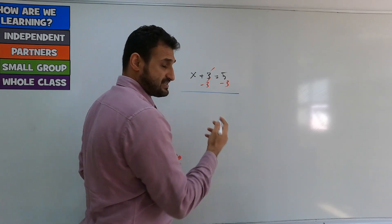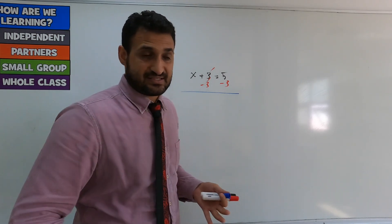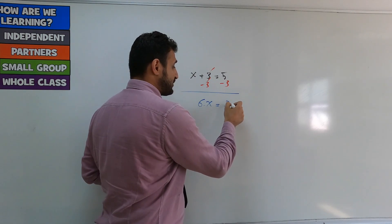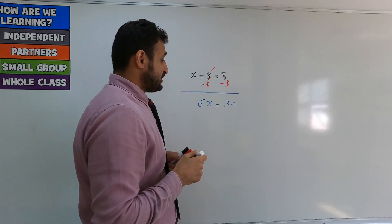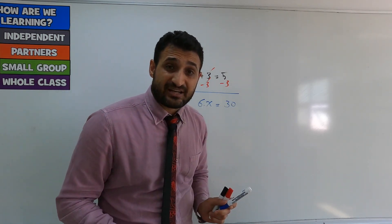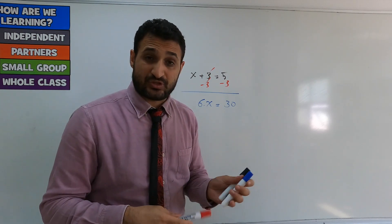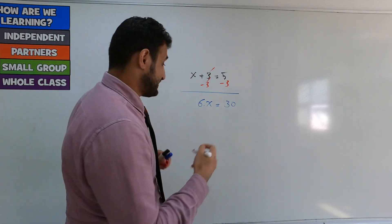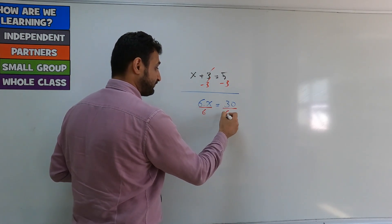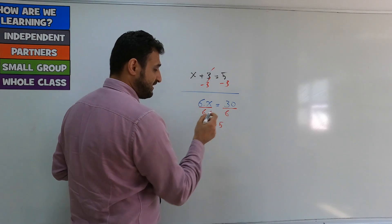Let's say x is multiplied by 6: 6x equals 30. x is multiplied by a number, so you need to do the opposite — divide both sides by 6. So x will be 5.